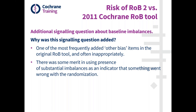In addition to these two familiar domains — because I saw 80% of you have used ROB, so you'll be pretty much fully familiar with allocation concealment and sequence generation — we have another signaling question, and that is about baseline imbalances. Why was this added? Partly because one of the most frequently added 'other bias' items in the original ROB tool — because we had this option for other bias — was added quite a lot.